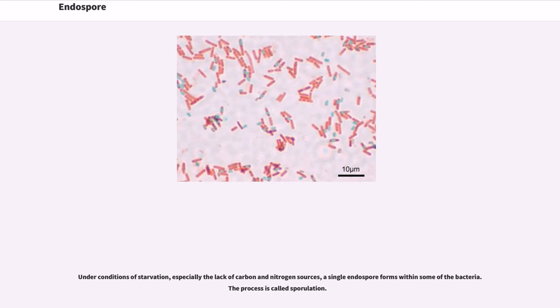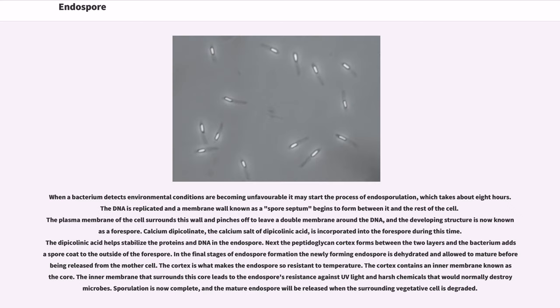Under conditions of starvation, especially the lack of carbon and nitrogen sources, a single endospore forms within some of the bacteria. The process is called sporulation. When a bacterium detects environmental conditions are becoming unfavorable it may start the process of endosporulation, which takes about 8 hours.